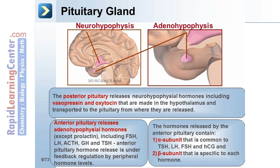The hormones released by the anterior pituitary contain an alpha subunit that is common to TSH, LH, FSH, and HCG, and a beta subunit that is specific to each hormone. The pulsatile release of hypothalamic, pituitary, and target organ hormones plays an important role in endocrine function.